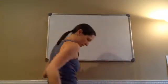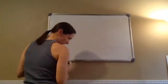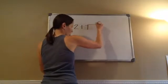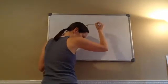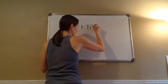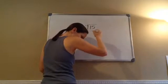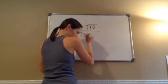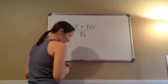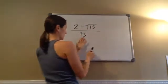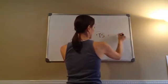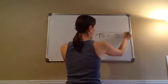And then the last example. It says to simplify: 2 plus square root of 15 divided by square root of 5. Again, we want to multiply it by the square root of 5, which will give me a 5 on the bottom.